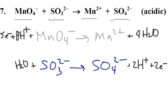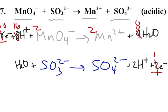Now we want the whole thing to be electrically balanced as far as the electrons go. The top one has five electrons, the bottom has two, so we're going to take our top equation and multiply by two - that'll make this ten electrons, sixteen hydrogens, and two, two, and eight. The bottom we're going to multiply by five, so that makes ten electrons, ten sulfurs, five, five, and five.